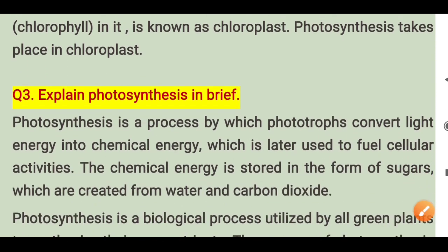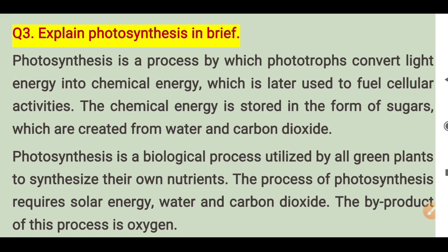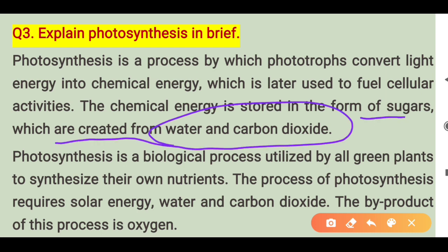Question number 3: explain photosynthesis in brief. Photosynthesis is a process by which phototrophs convert light energy into chemical energy. The word 'photo' refers to light, so photosynthesis means using light energy to synthesize. Light energy is converted into chemical energy, which is then used as fuel for cellular activity. Chemical energy is stored in the form of sugars created from water and carbon dioxide.